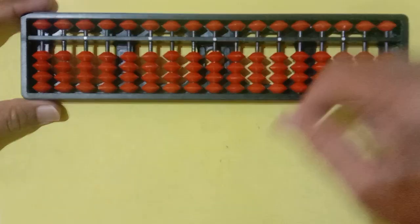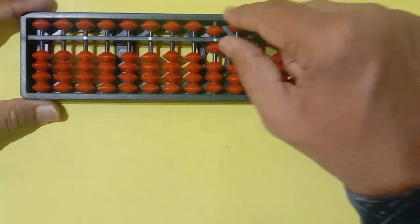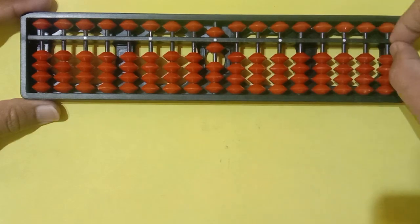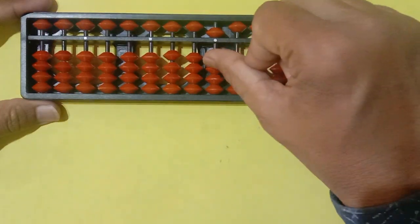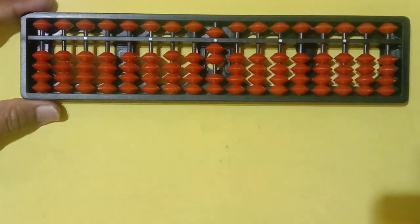Now, how to write six? So five add one, it becomes six. Okay students? Now, five add two, it becomes seven.